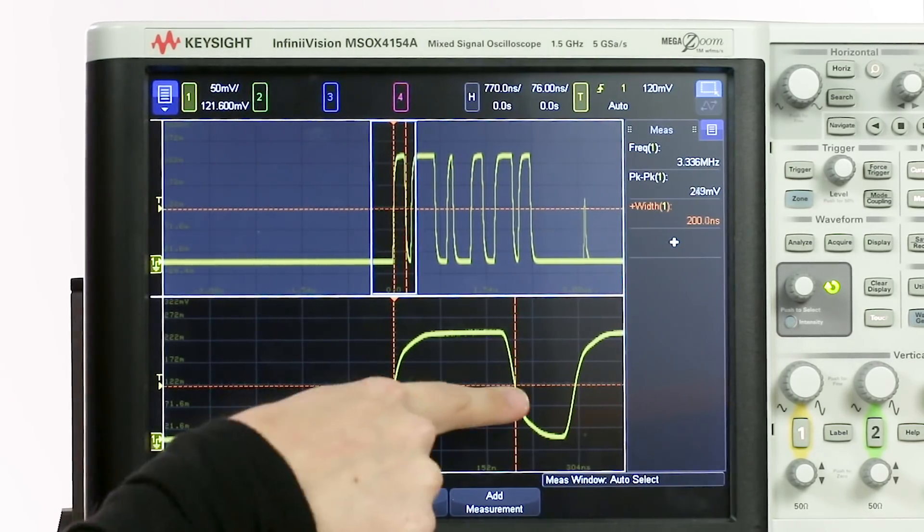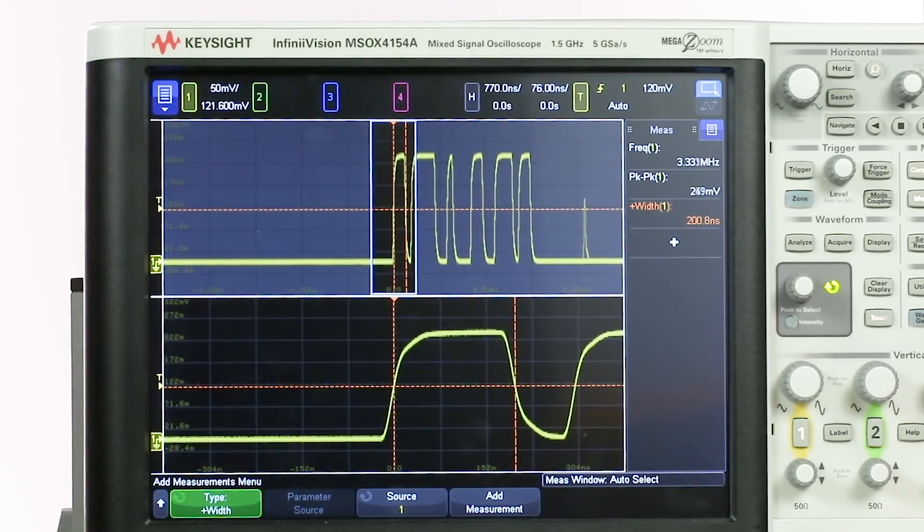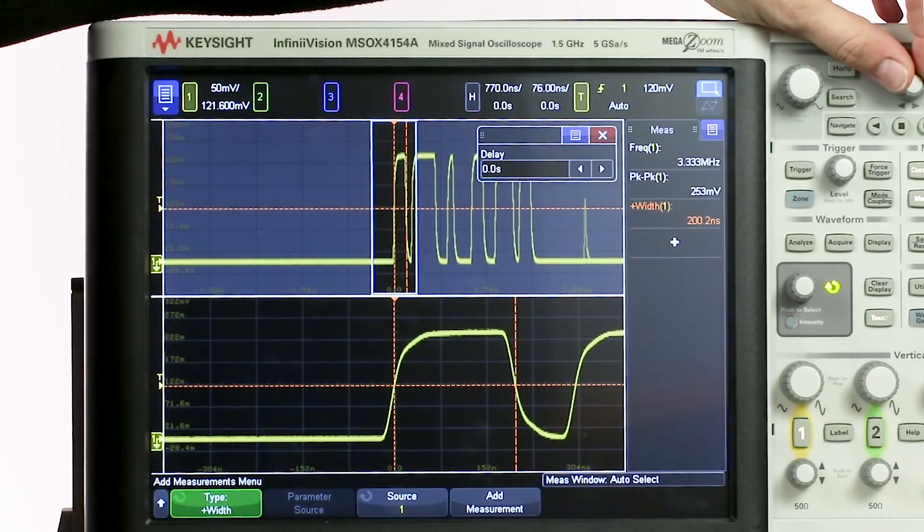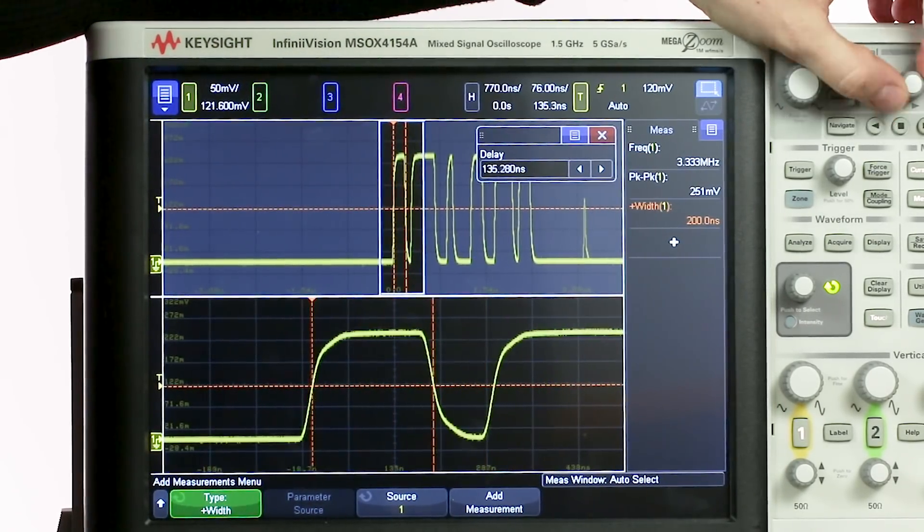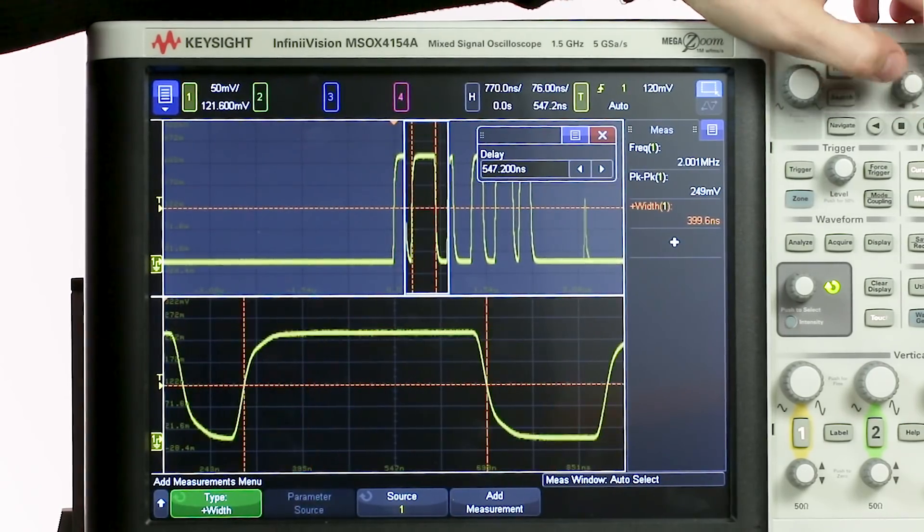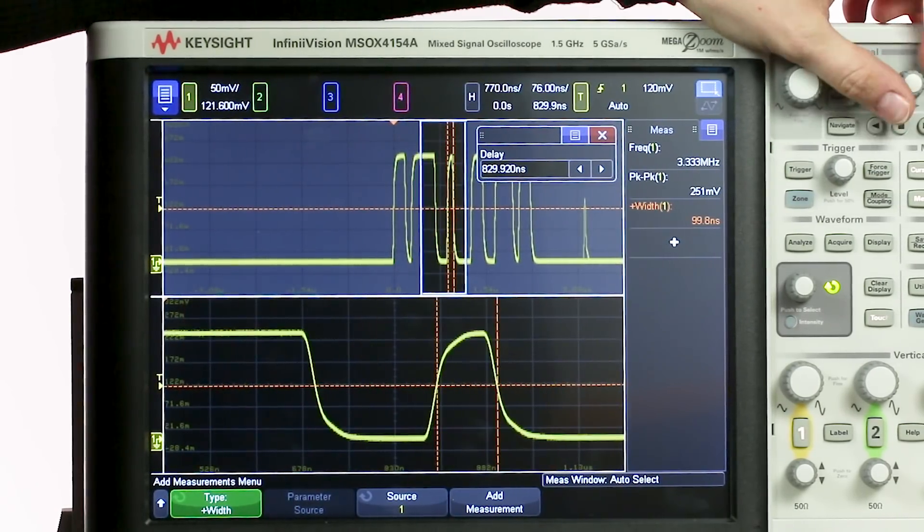If I go back to the measurement menu, I can set the measurement window to zoom, and now the oscilloscope is only making measurements in this zoomed in portion on the bottom half of the screen. So you can see as I scroll through each of these pulses using the zoom window, the measurement jumps to that pulse. So that allows us to individually measure each of these pulses.